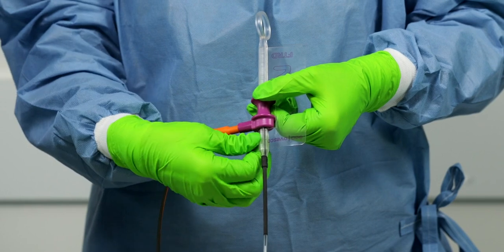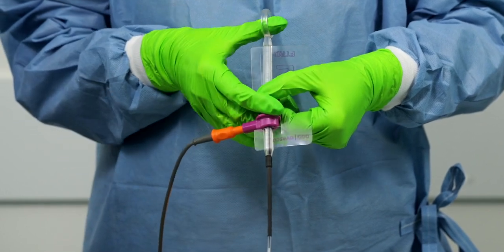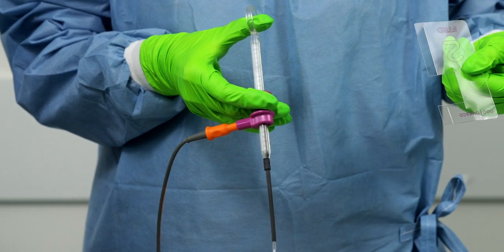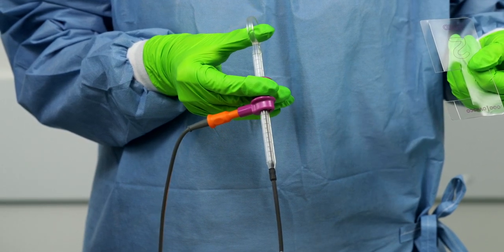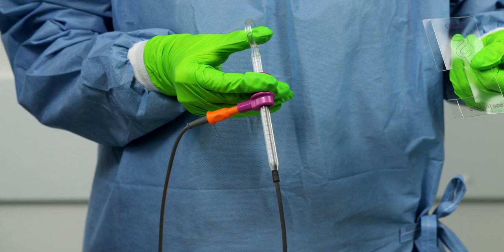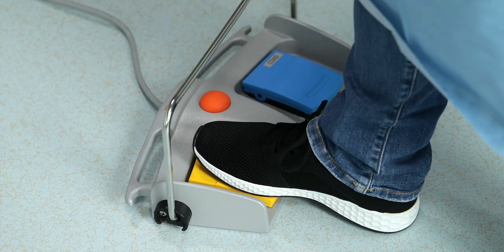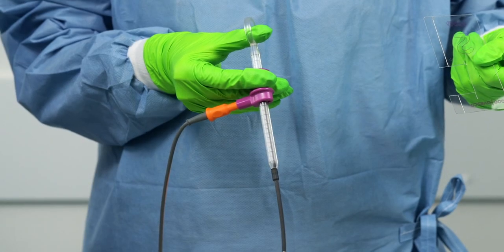After the clip has been applied, give the command to release the snare safety lock. Pull the sliding handle backwards until resistance is reached and hold it in this position. Activate the HF current for the final resection after the snare is securely closed around the tissue.